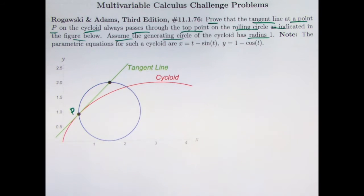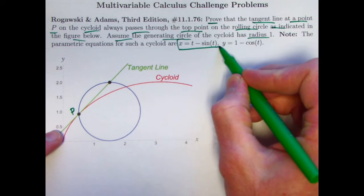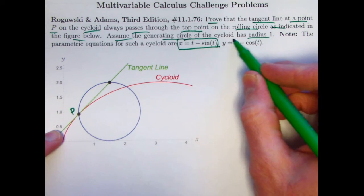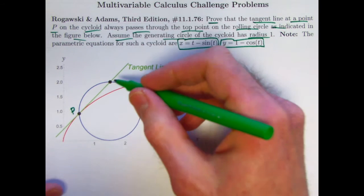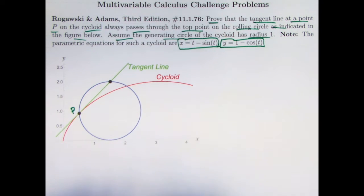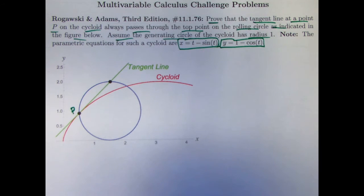For simplicity, we'll assume this generating circle has a radius of 1. I'm not interested in deriving the parametric equations for this cycloid. Here they are: x equals t minus sine t and y equals 1 minus cos t. That is a good exercise for you to try to derive these equations. I'm just going to use these equations to help me solve this problem to verify that this tangent line goes through that top point. Right now I'm going to go to my Mathematica to show you how I generated this picture and make an animation of it.